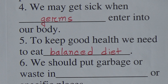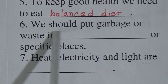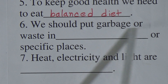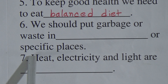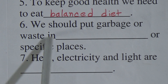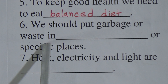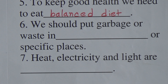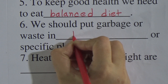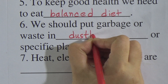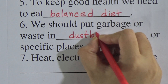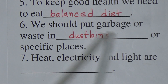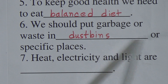Number six is: we should put garbage or waste in dash or specific places. The answer is dust bin. We should put garbage or waste in dust bins or specific places. So we will write here: dust bin.